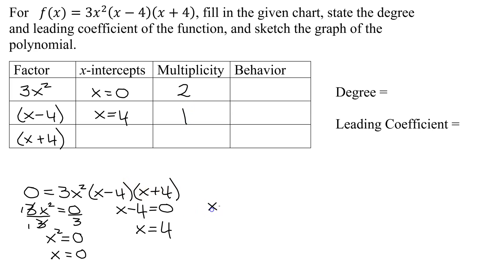Last factor, x plus 4 equals 0. Solve that. Subtract 4 from both sides. I get x equals negative 4. So that's my last x-intercept. And what's the exponent that we're too efficient to write up there? It's a 1.